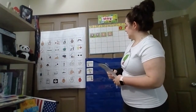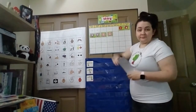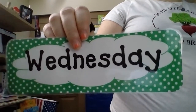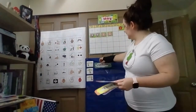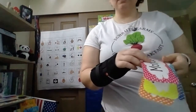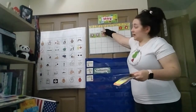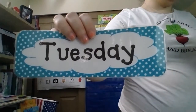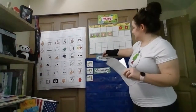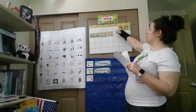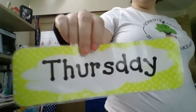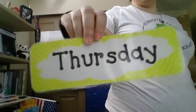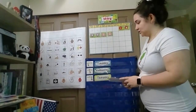Let's do our days of the week. Today is what day? Today is Wednesday. What color is Wednesday? Yes, Wednesday is green. And if today is Wednesday, that means that yesterday was what day? What comes before Wednesday? Tuesday. What color is Tuesday? Yes, Tuesday is blue. And if today is Wednesday, that means that tomorrow will be what day? Tomorrow will be Thursday. What color is Thursday? Thursday is yellow. Great job with the days of the week, my friends.